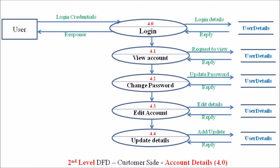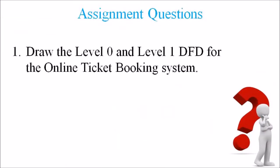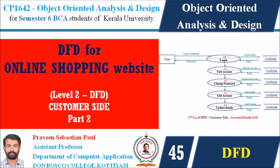Hope you have understood this topic. The assignment question is: draw the level 0 and level 1 DFD for an online ticket booking system. In the upcoming lecture we will discuss the last lecture for the data flow diagram, which will also include the level 2 DFD for the customer side of an online shopping website. See you soon — goodbye, thank you, and all the best.